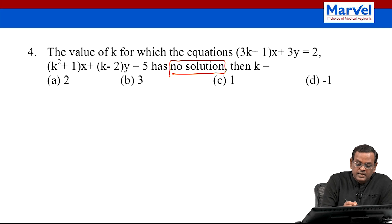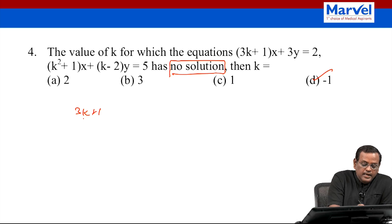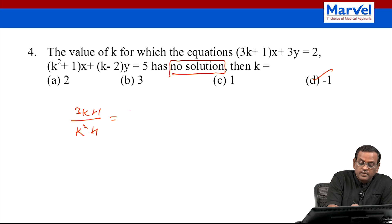The correct option is D: (3k + 1) / (k² + 1) = 3 / (k - 2), not equal to 2/5.